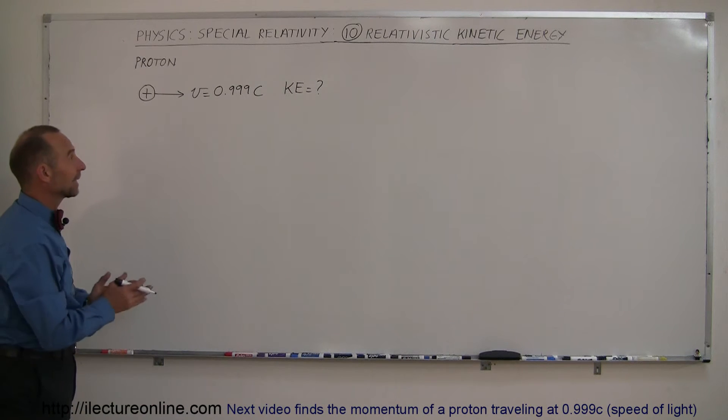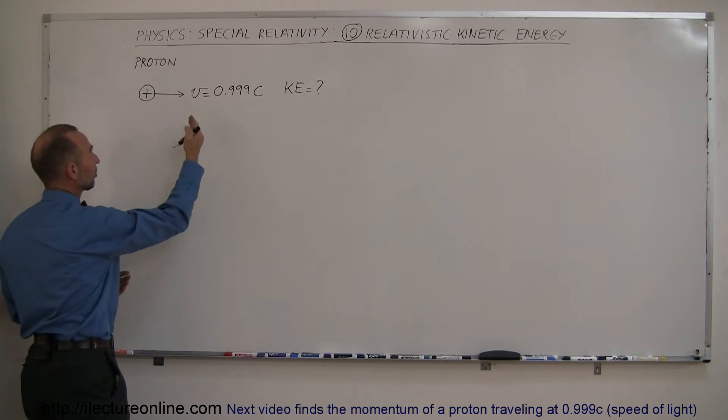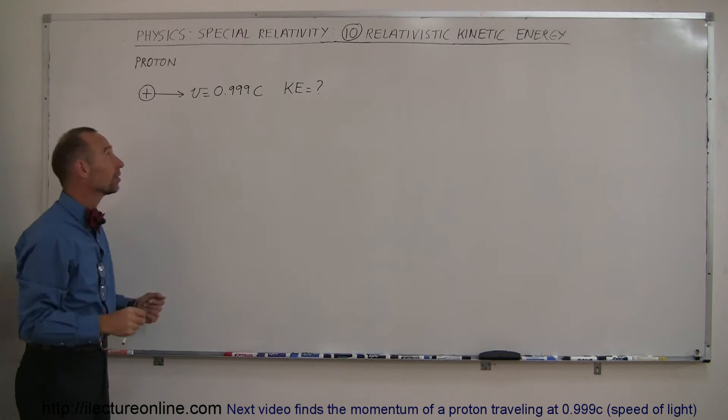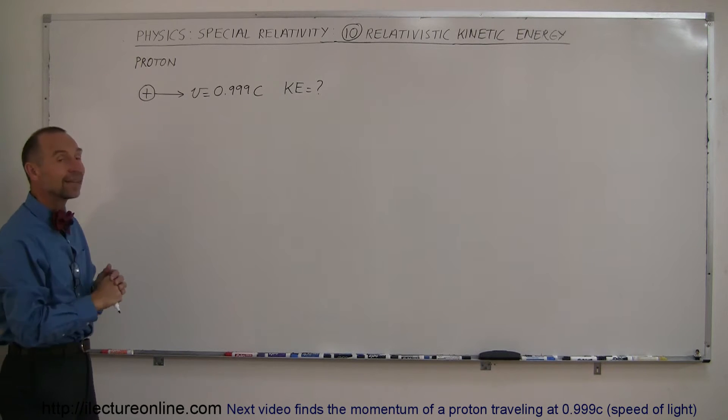And here's an example of how to find the kinetic energy of a very fast-moving object. In this case, we're going to take a proton. Let's say that the proton is being accelerated in one of those big accelerators to a speed of 0.99c, or 99.9% of the speed of light. What would be the kinetic energy of such a proton?